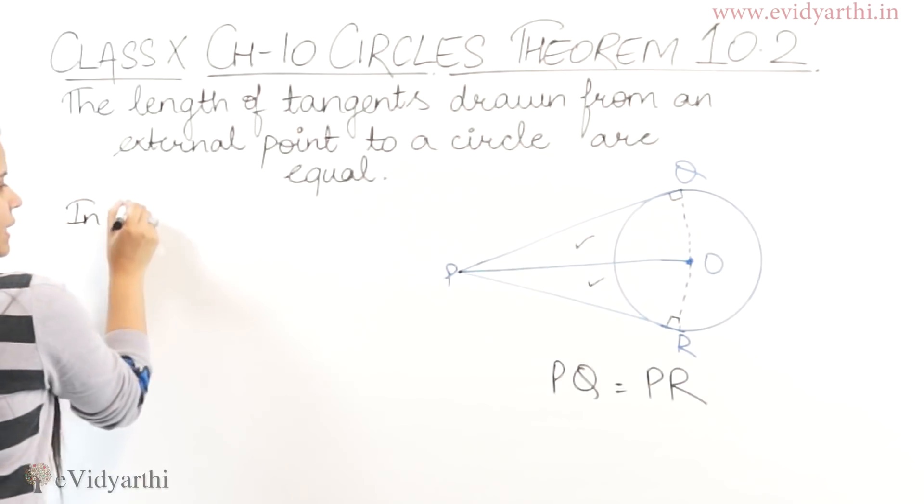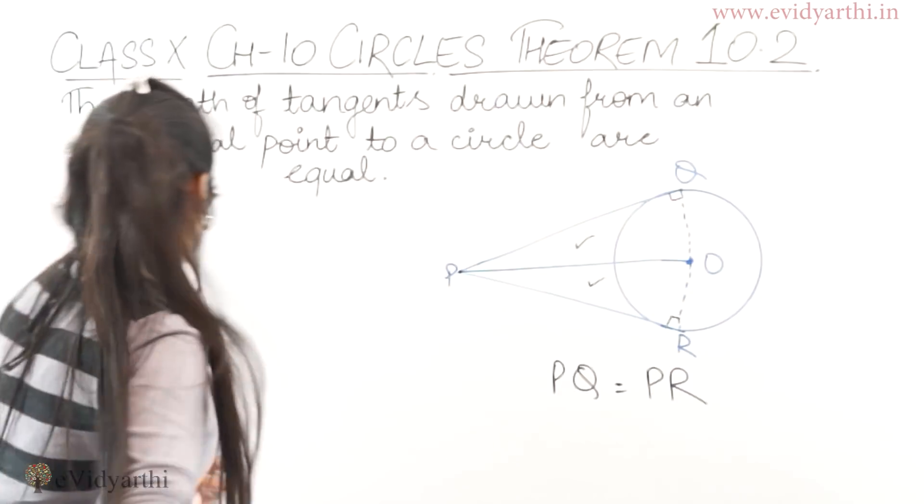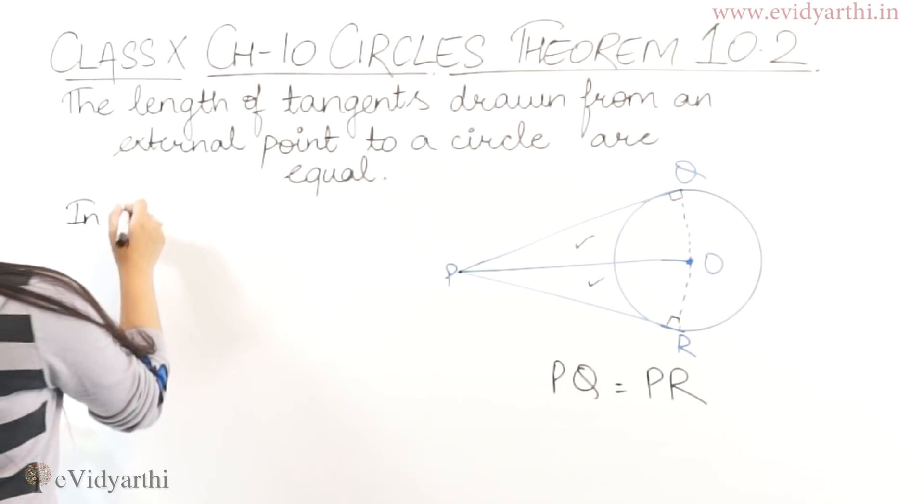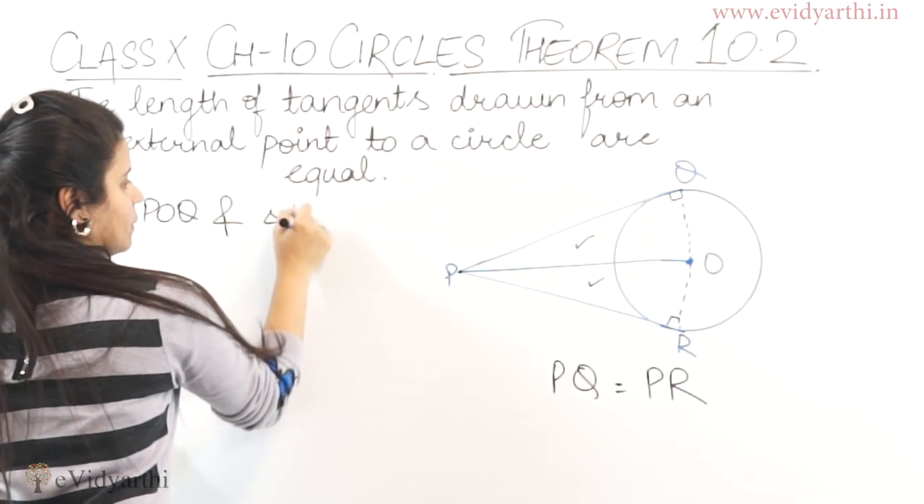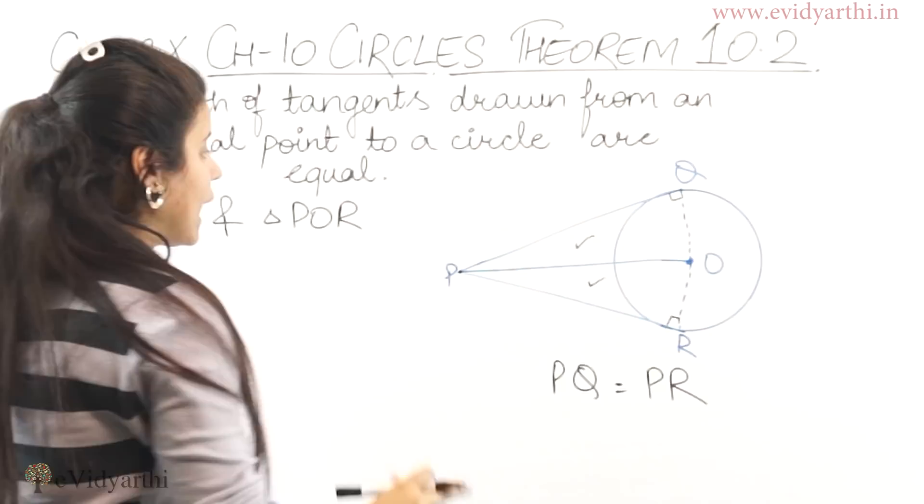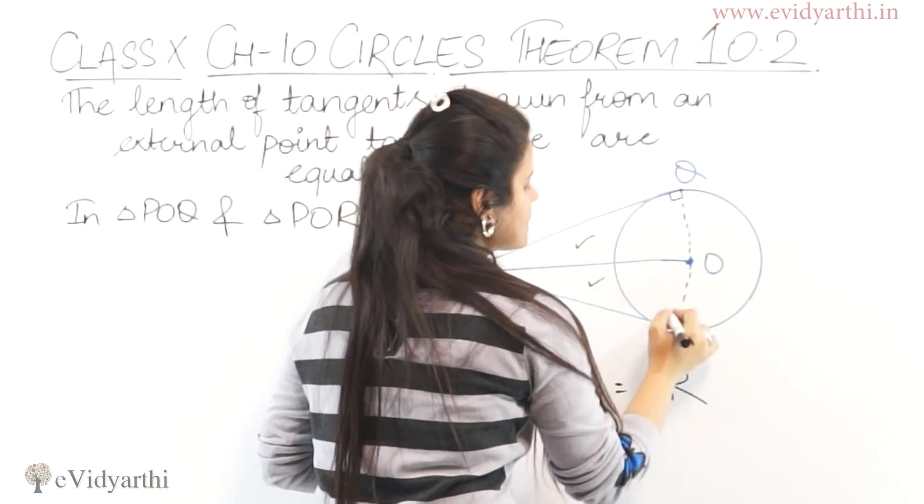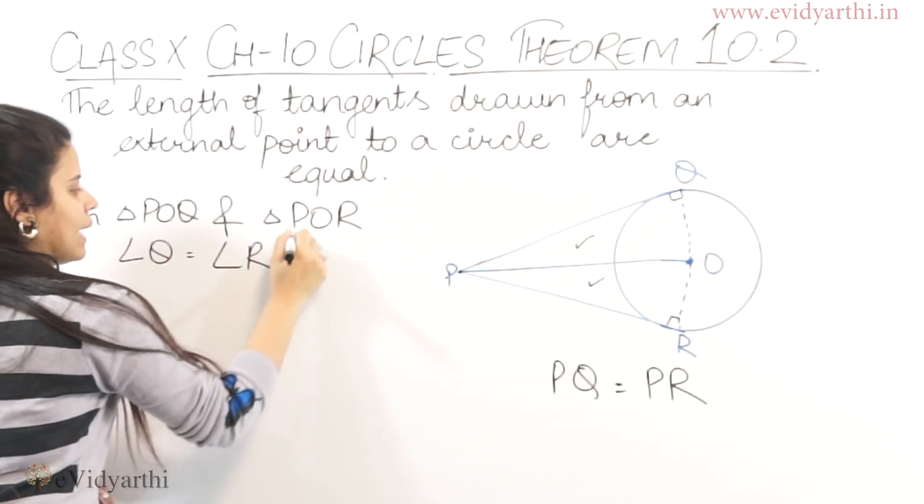So we will take these triangles, triangle POQ and triangle POR. If we take these triangles, then we have seen these angles are 90 degrees. So we can say angle Q equals to angle R.